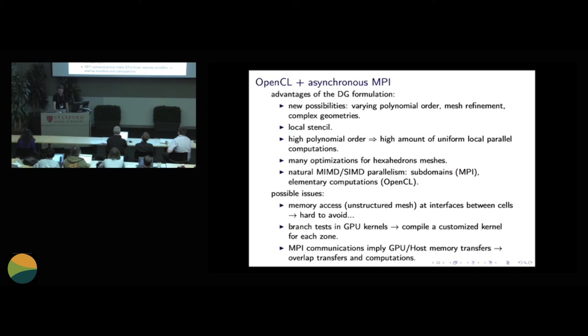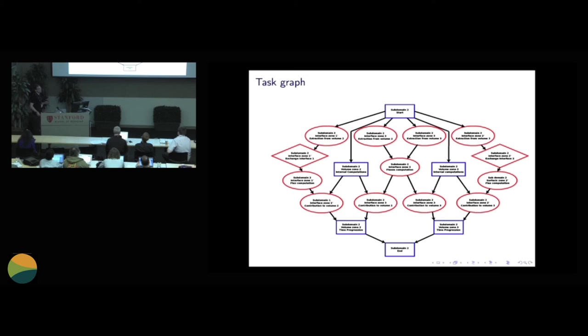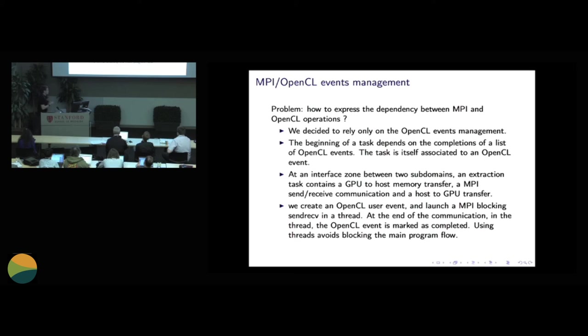What is important is that you have many computations to do. So you have volume computation, you have interface computations, and you have data exchange between the zones and the subdomains. And in order to manage all this, we decided to rely on the OpenCL event management. So we are describing all the tasks that we have to do in order to perform the computation for one time step. So you have the task graph of all that you have to perform. You have a zoom on a task graph of one single subdomain. And for instance, what you observe, you observe that you can perform volume computation inside a volume zone while you are doing communication with the neighboring zones. And using the OpenCL event, it's possible to describe the dependency between the tasks.